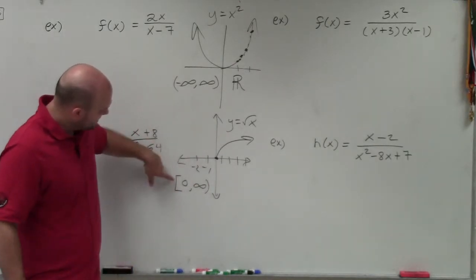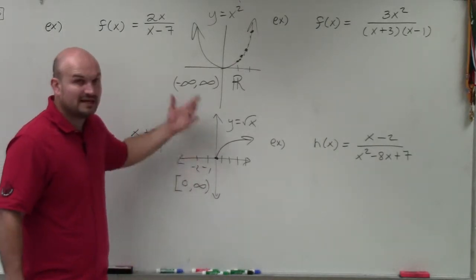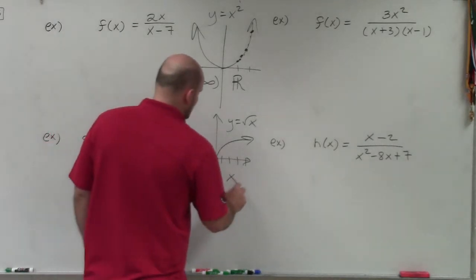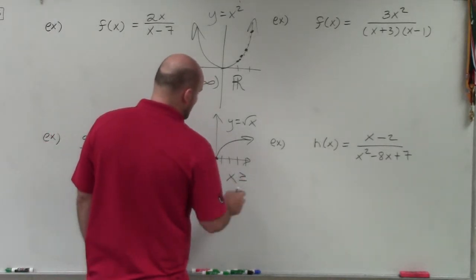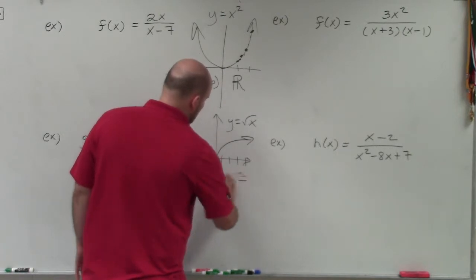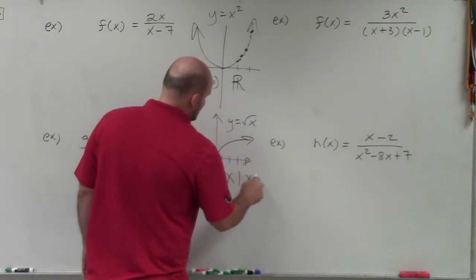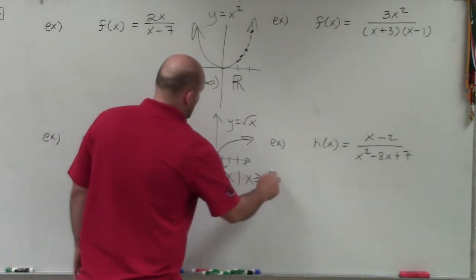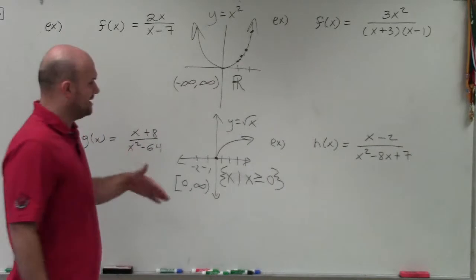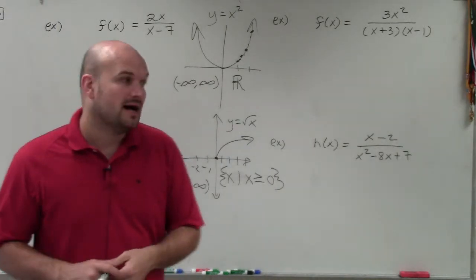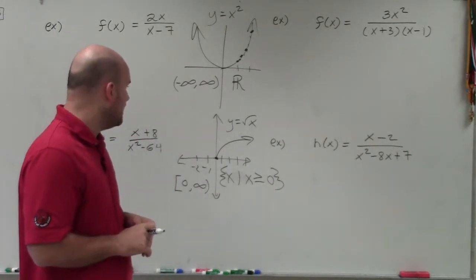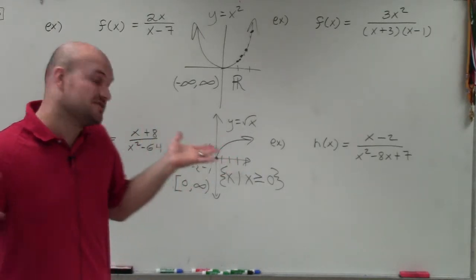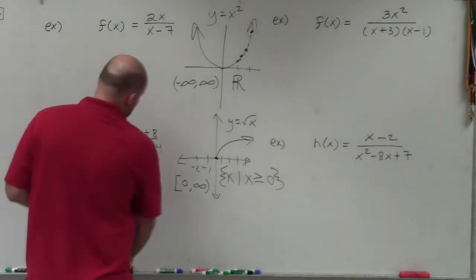We can write the domain as 0 to infinity using a bracket at 0 because it's included, and a parenthesis at infinity because you can't include infinity. Or you could write x such that x is greater than or equal to 0. I'll write the domain in multiple different formats so you can see which ones you might encounter on a test.